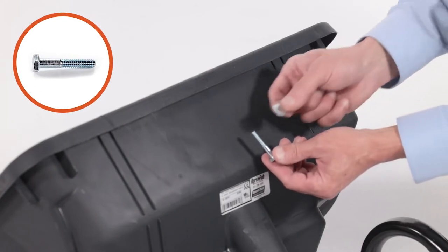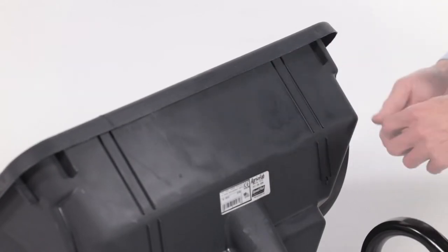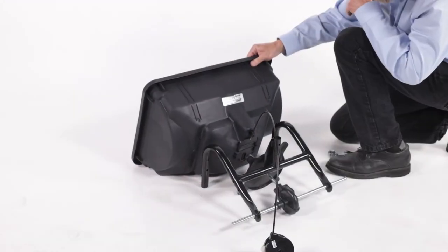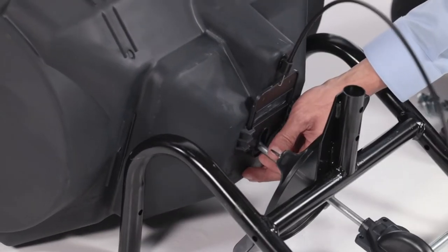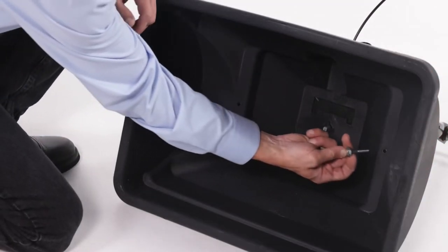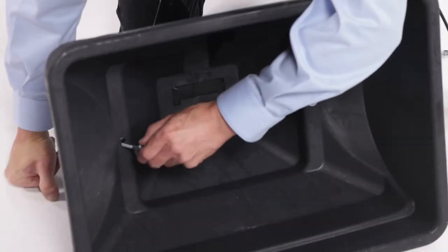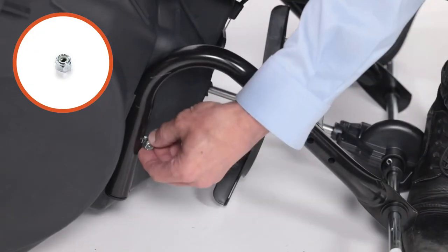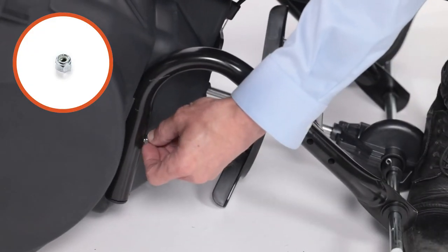Now assemble two 1⁄4-20 by 1 1⁄2-inch hex bolts, Part C, and two small washers, Part E. Then align the hopper, Part T. Next, insert the bolt assemblies down through the hopper and the frame assembly. Fully secure it with two 1⁄4-20 nylock hex nuts, Part F.